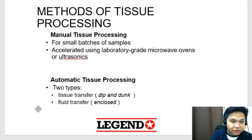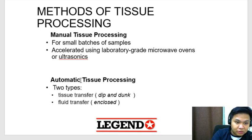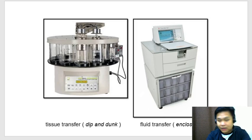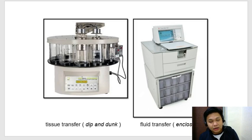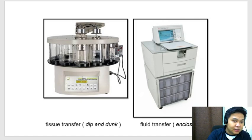Methods of tissue processing — you have 2 methods: manual and automatic tissue processing. Yung manual, ito yung usual na ginagawa natin sa laboratory; you do not use any special equipment. Pag sinabi yung automatic, gumagamit tayo ng equipment to automate the process. There are 2 types of automatic tissue processing: tissue transfer and fluid transfer. For tissue transfer, tissue yung tinatransfer natin from each container to different reagents. Pag fluid transfer naman, yung tissue will remain in one container only — ang nagpapalit would be the reagents.